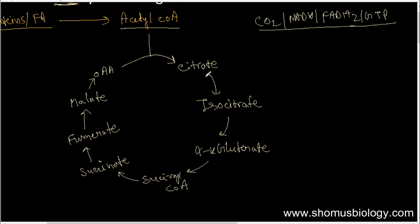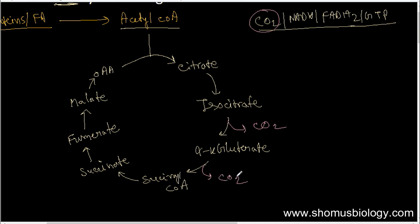Regarding CO2: it is released at two different places. First, in the conversion of isocitrate to alpha-ketoglutarate — CO2 is released there. The second place where CO2 is released is from alpha-ketoglutarate to succinyl CoA. These are the two points of carbon dioxide release in the TCA cycle.